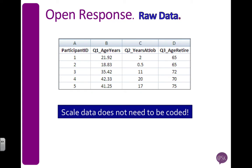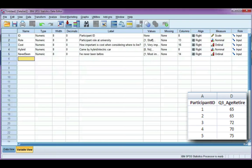Let's look at how we might lay out our data for the first three question examples: what's your age in years, how many years have you been at your job, and what age do you plan to retire? Scale data does not have to be coded, which is great — we can just enter the raw data as it is. Let's look at how we define this variable and enter the data into SPSS.